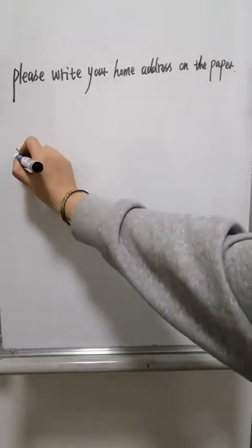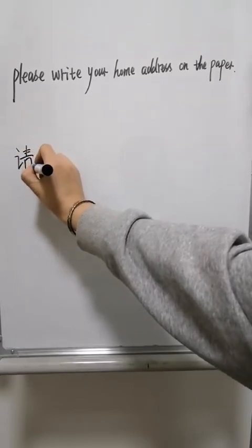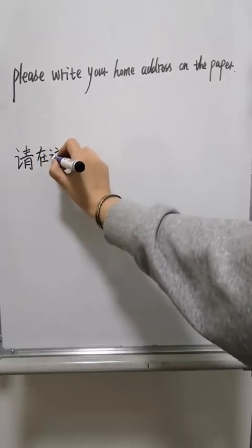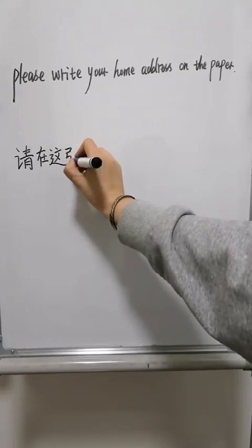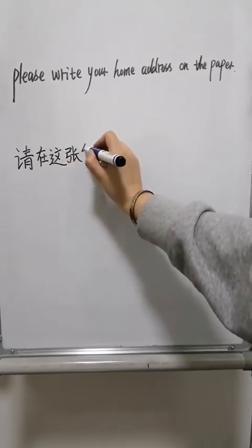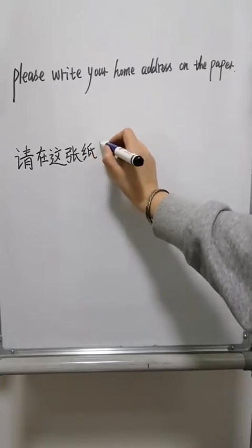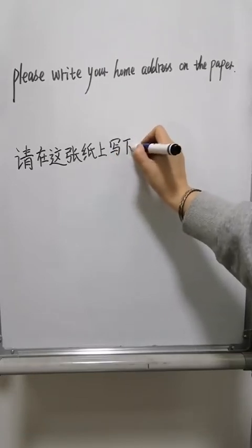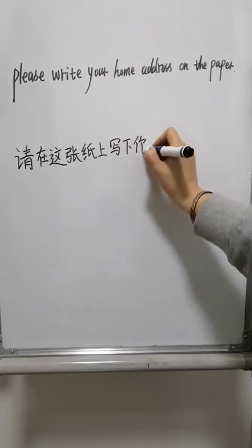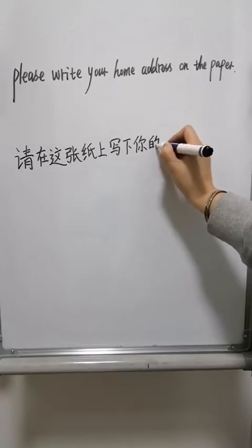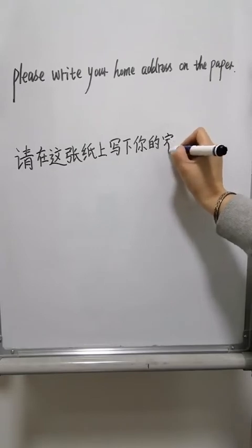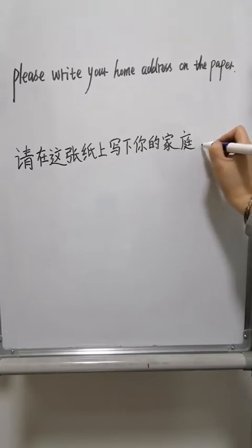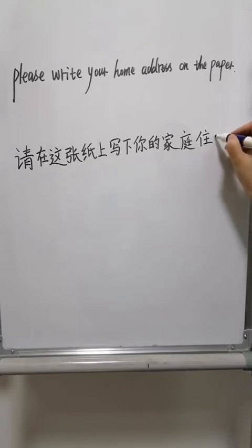In Chinese, this means: 请 (qǐng) 在 (zài) 这 (zhè) 张 (zhāng) 纸 (zhǐ) 上写 (shàng xiě) 下你的 (xià nǐ de) 家 (jiā) 停 住 (zhù).